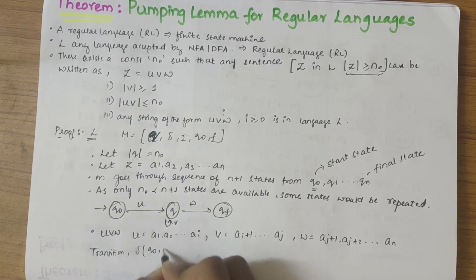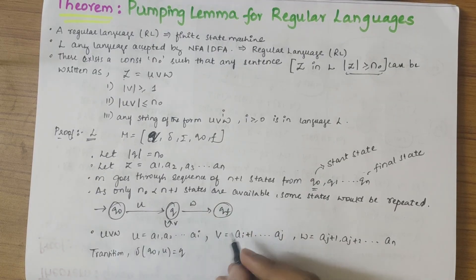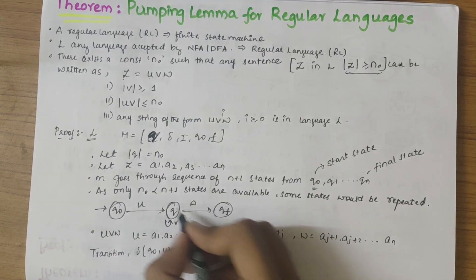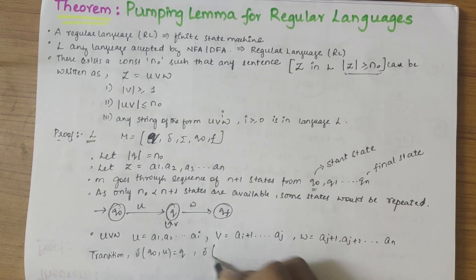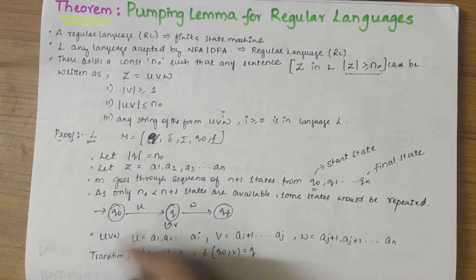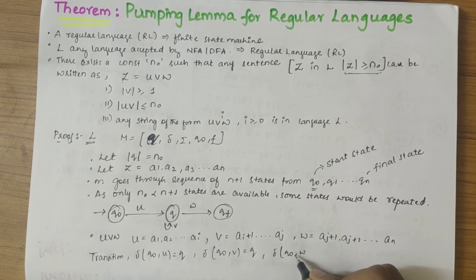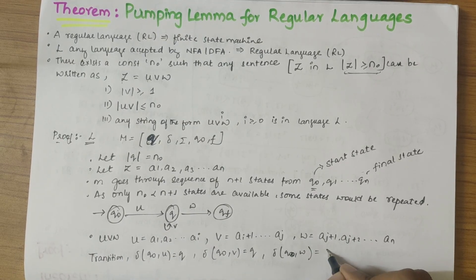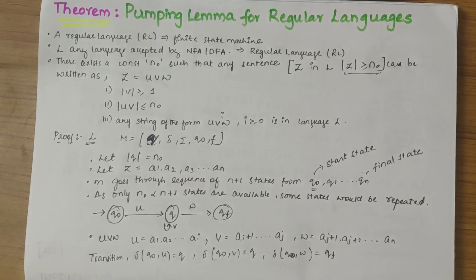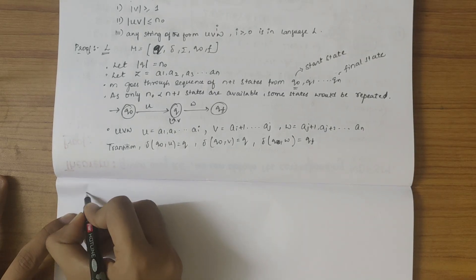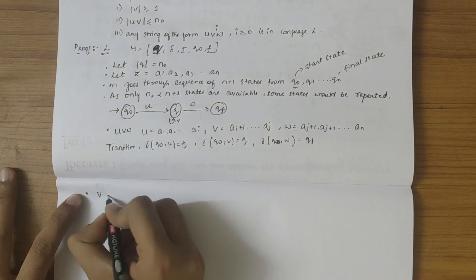transition of q naught on u would give q itself. Transition of q naught on v would give q self loop, and transition of q on w would give qf, that is the final state. So here if you see, v repeats...